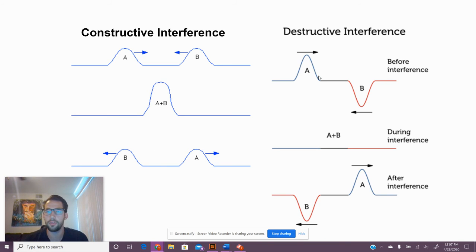With destructive interference, we have a crest and a trough that collide in the middle, and you can see that this is just as high as this is low. So when they collide, it flattens out the sound, and you wouldn't hear anything in this instance. And then they pass each other and return to their normal shape.